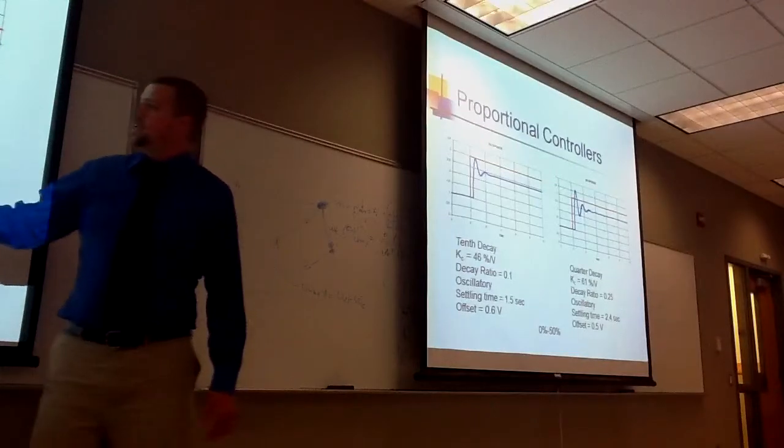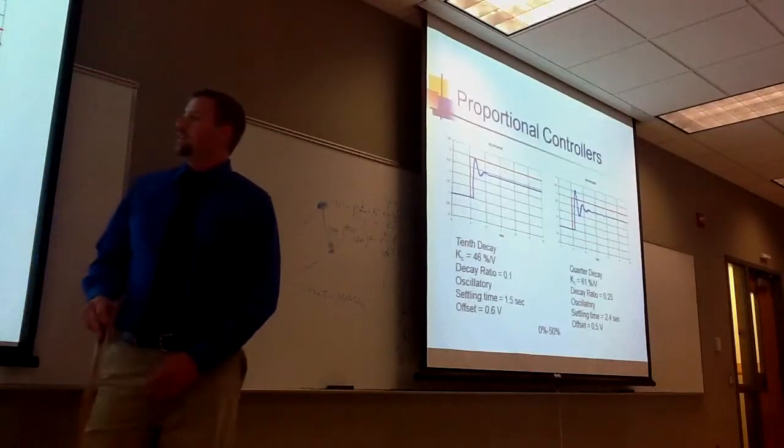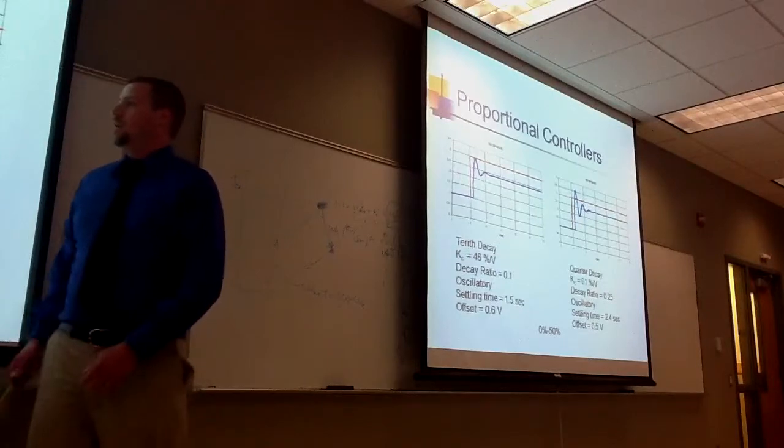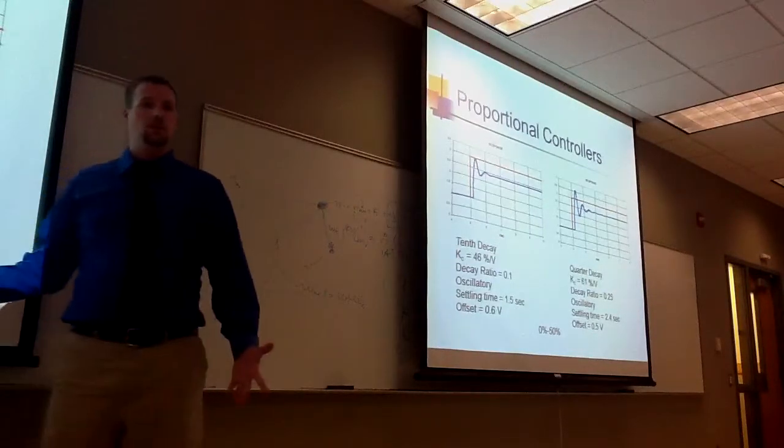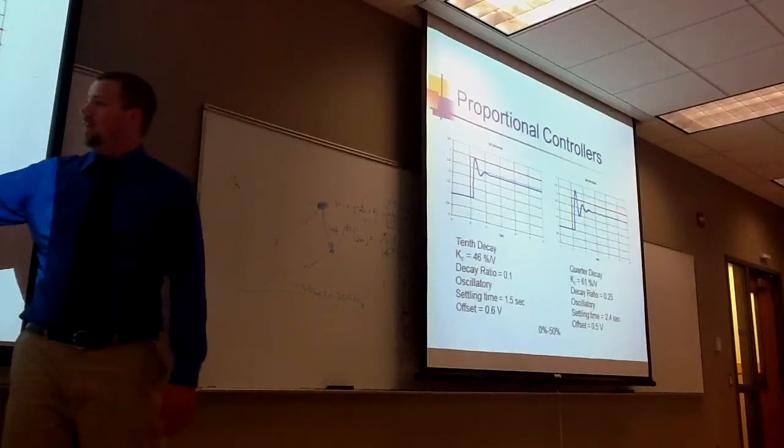This is 1/10th decay. KC value of 46% per volt. And the settling time of about one and a half seconds. So it took a little bit longer to settle there. And the offset is lower, 0.6 volts.